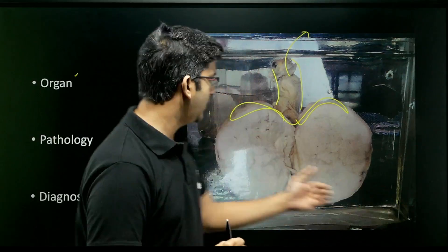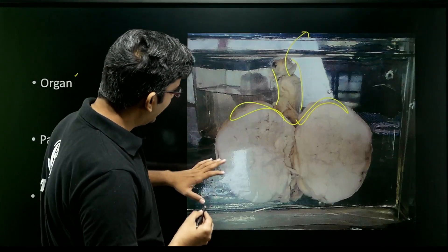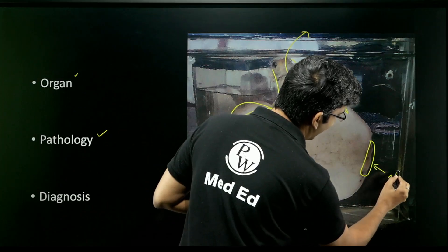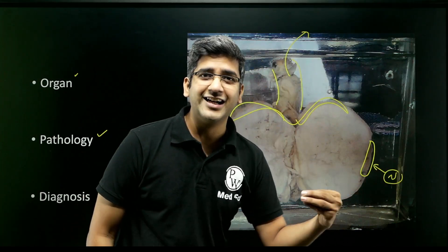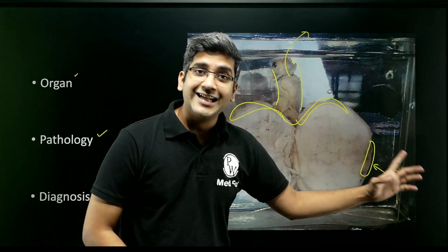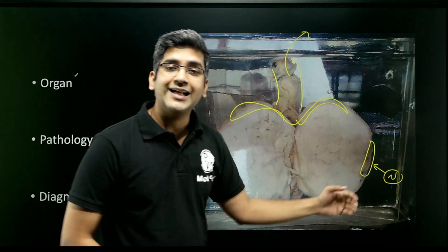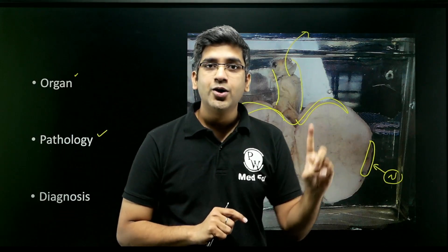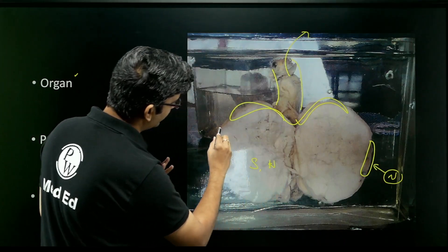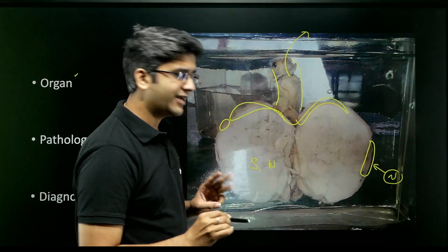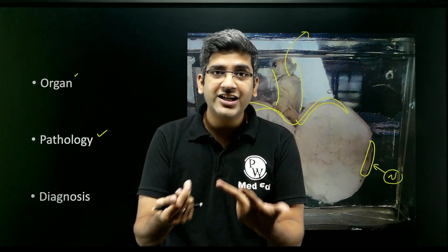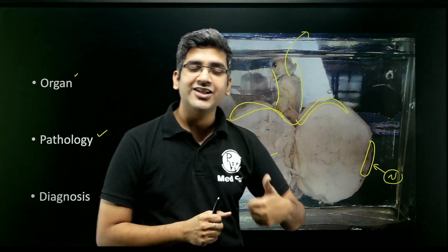Now let's come to the pathology. In the cut section of the testis, I see normal testicular parenchyma only in one area — you can appreciate the brownish color. The entire testicular parenchyma is compressed to one side and replaced by a solid, homogeneous lesion, most likely a tumor. There are no cystic areas, no areas of necrosis, and no areas of hemorrhage. Negative findings are also very important — reiterating that it is solid and homogeneous.